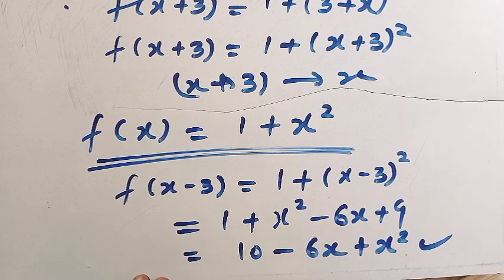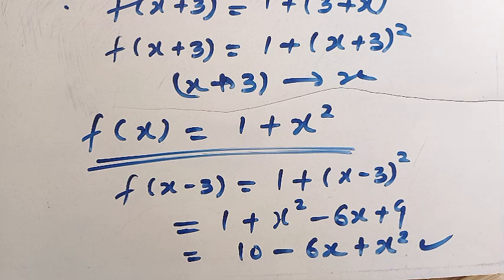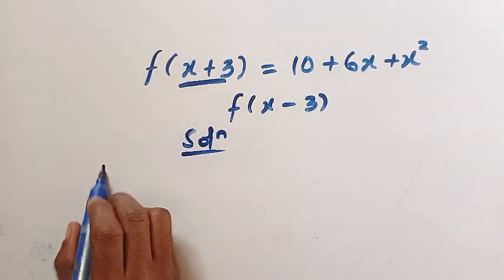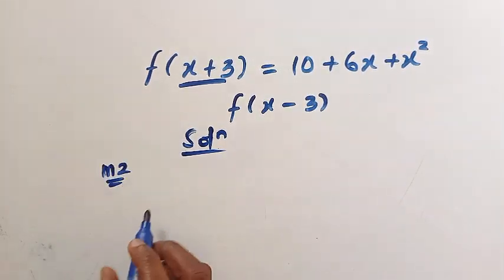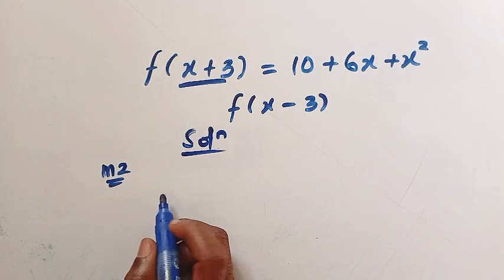So that is how to solve for f(x minus 3) using the first method. Now let's get into the second approach of solving this same problem. For the second method we are going to use direct substitution.